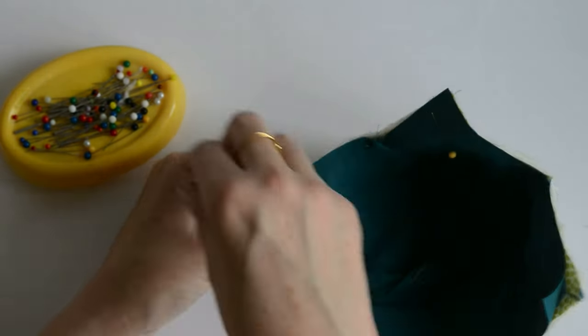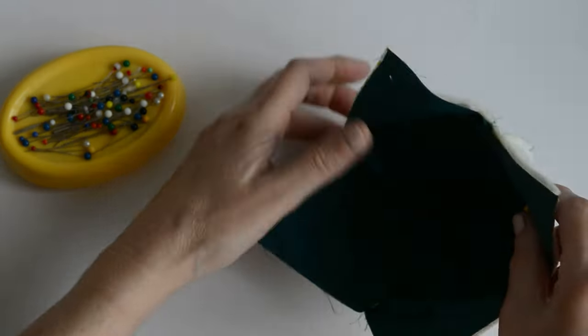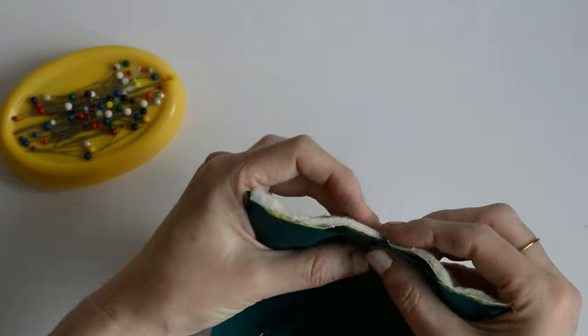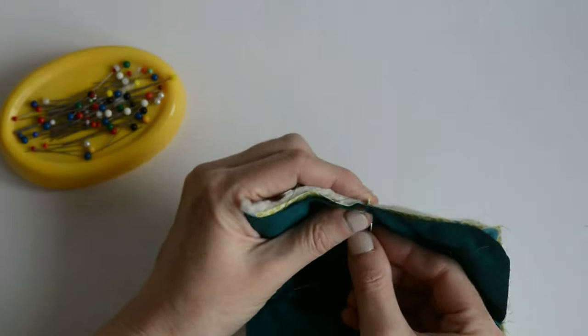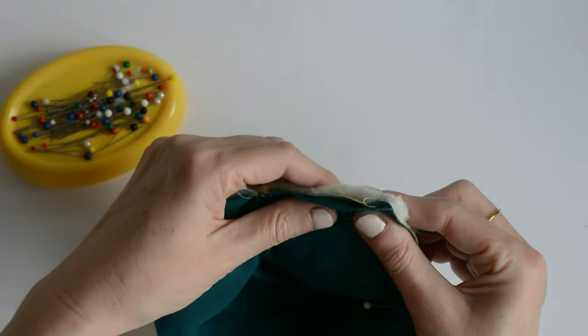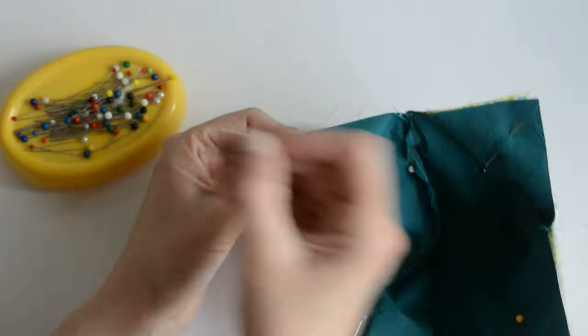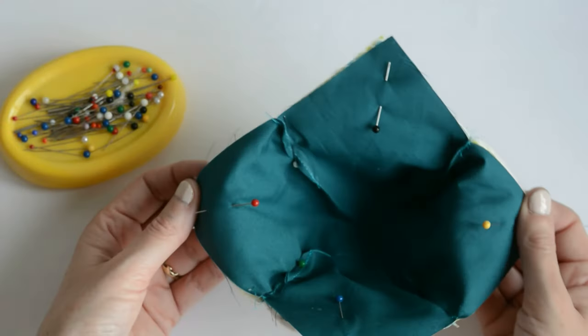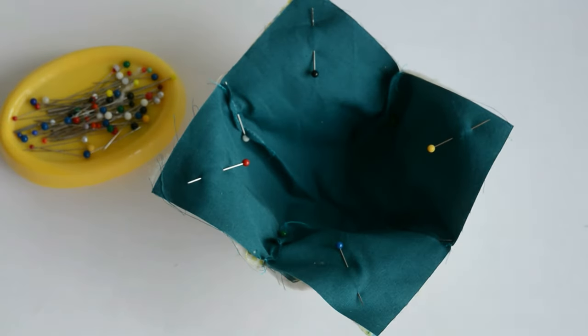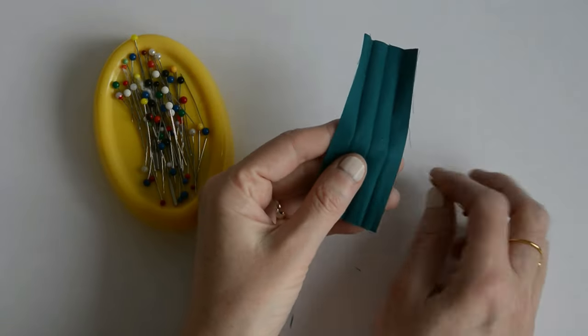Now if you want, you can make hanging loops. So I'm going to demonstrate doing that but it's totally up to you and how you envisage storing the bowl cozies. Personally I'm probably just going to go in my tea towel drawer to be honest, but it's always good to see the option isn't it?